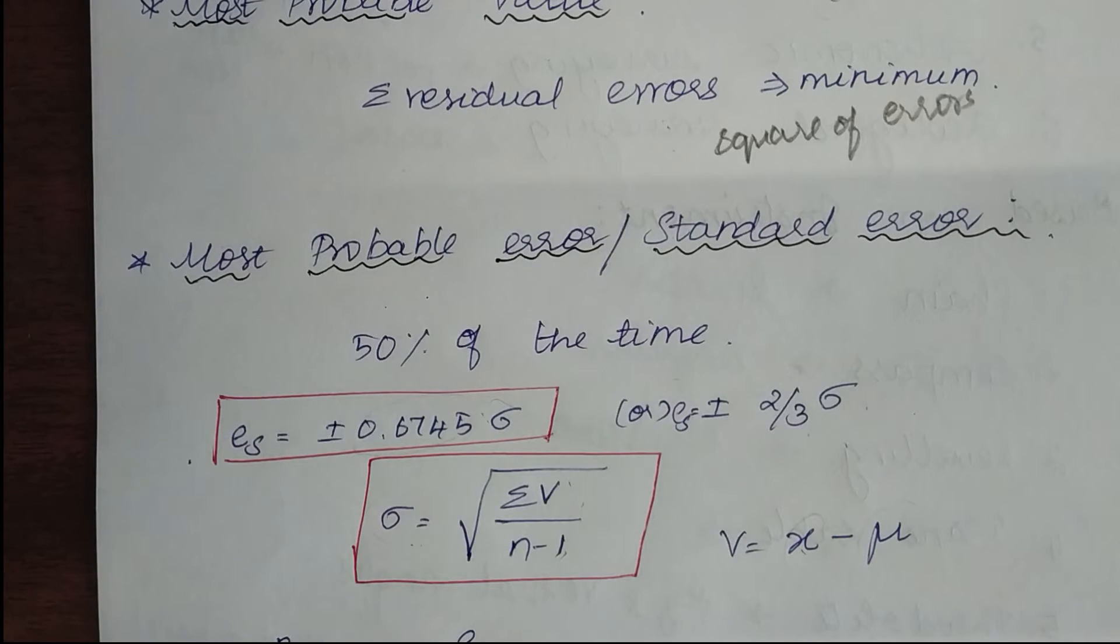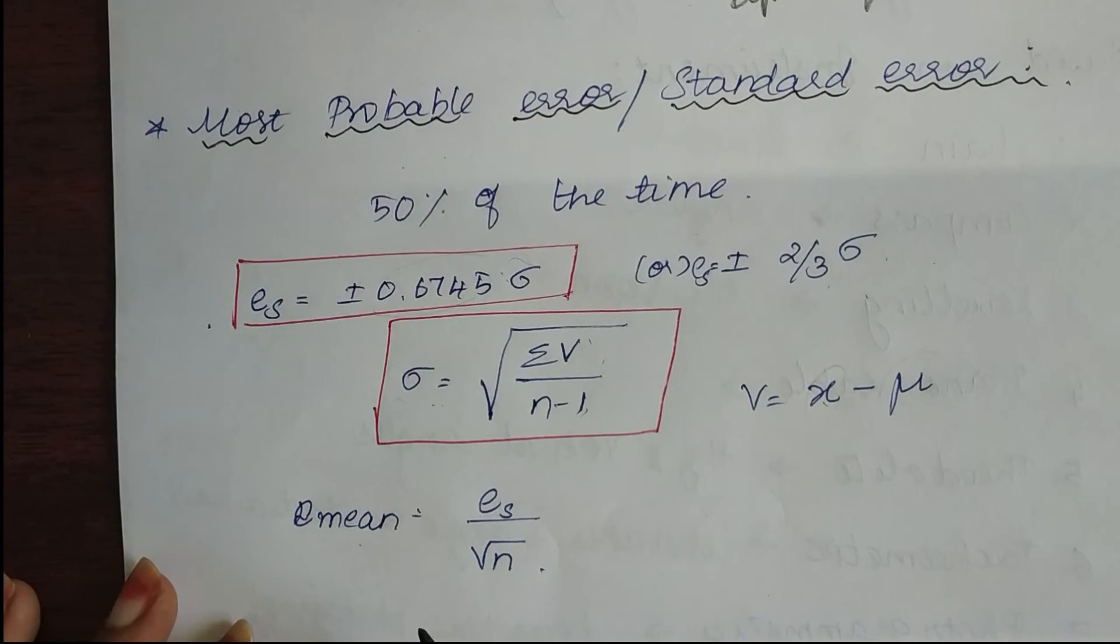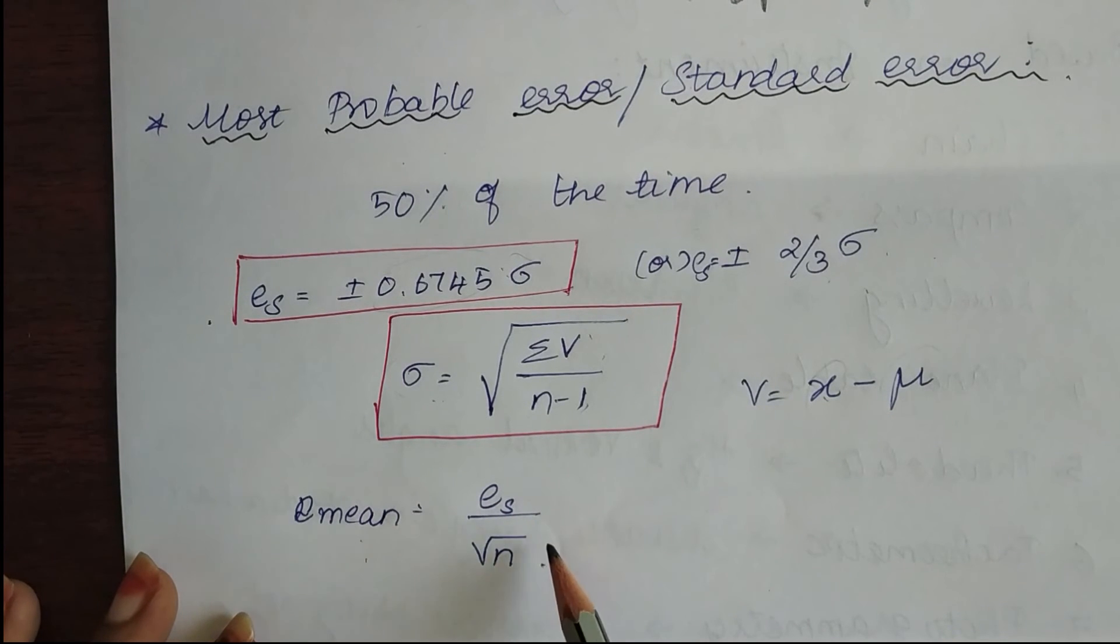To find the probable error of the mean, we use the formula es divided by root n, where n is the number of observations.